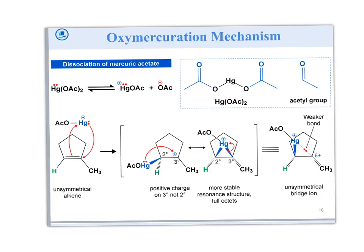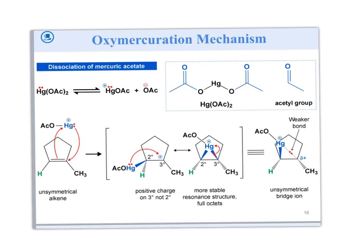Here's what actually happens in the mechanism. You have HgOAc, and the OAc leaves — the mercury has a plus charge. The pi bond reacts with the mercury, and at the same time the lone pair on the mercury reacts with one of the carbons of the pi bond. So you form a three-membered ring called the mercuronium ion. This is the most stable intermediate. The mercury adds on one face — either top or bottom — forming this three-membered ring.